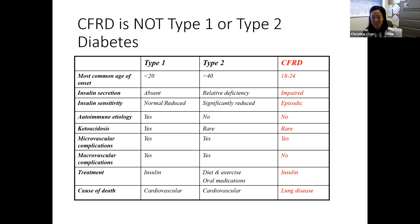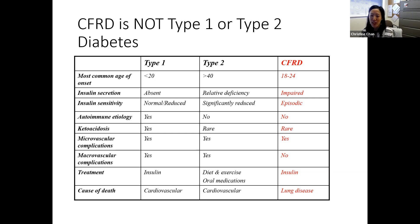CF diabetes does have components of both insulin deficiency and insulin resistance, but it's different. Some folks may have heard the term type 3C diabetes — that's another term for CF-related diabetes, or diabetes related to problems with the pancreas directly, inflammation of the pancreas, that are not type 1 or type 2. It's a different entity.